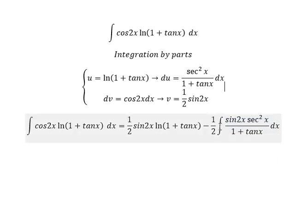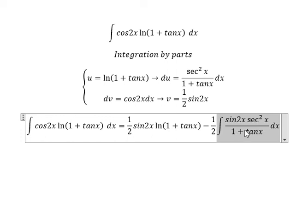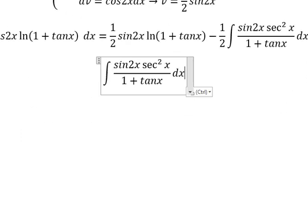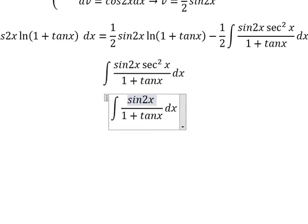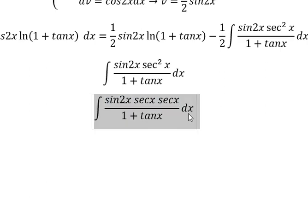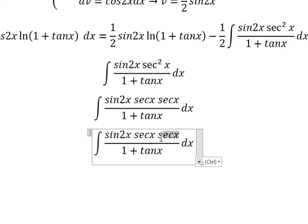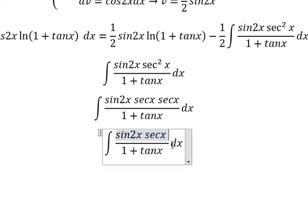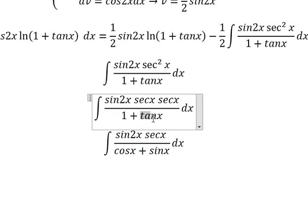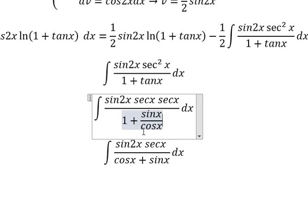Now I will concentrate on this integral only. We know that sec²x can be written as sec x times sec x. And we know that sec x equals 1 over cos x. So I will put cos x here. Because cos x multiplied by tan x, and tan x equals sine x over cos x, so when cos x multiplies this, we have sin x.